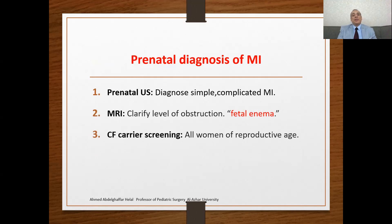Prenatal diagnosis of meconium ileus: can we diagnose meconium ileus prenatally? Yes, and this is the importance of antenatal care. We can use prenatal ultrasound, which will diagnose both simple and complicated meconium ileus. Also, we can perform MRI, which will show the distribution of the meconium inside the small and large bowel and clarify the level of the obstruction — it may act as a fetal enema. If we suspect meconium ileus, we must perform cystic fibrosis screening for the mother. There is now a recommendation that all women of reproductive age must undergo cystic fibrosis screening, because if cystic fibrosis is found, in certain cases termination of pregnancy may be considered.